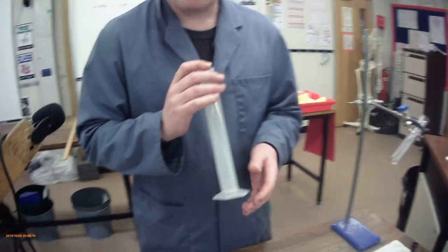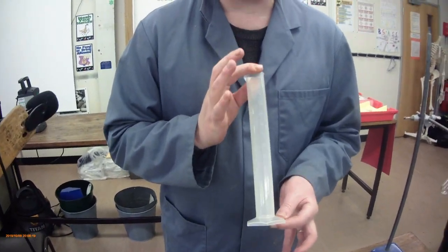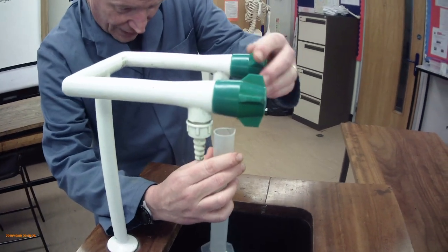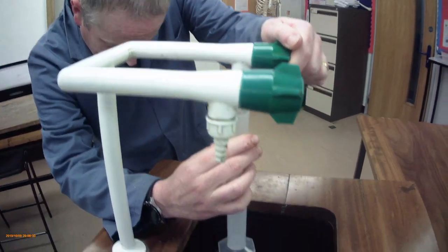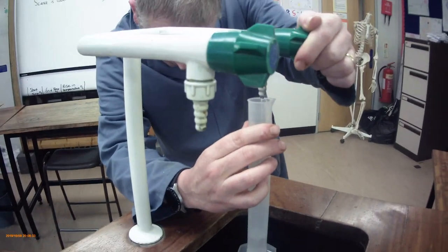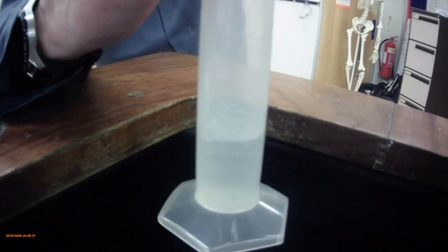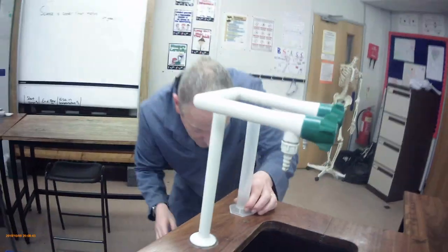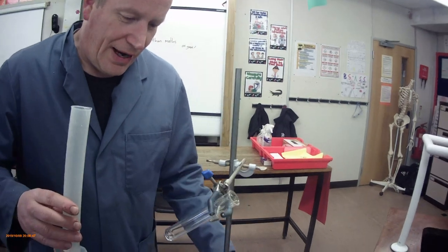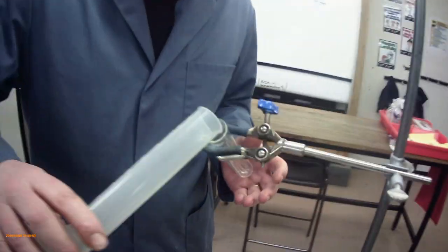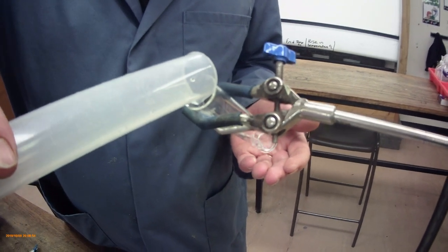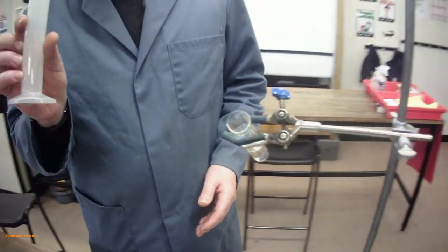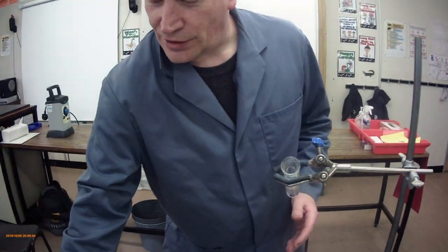For accurate measurements always use a measuring cylinder. We're going to use 20 milliliters of water. So very carefully I'm just going to fill up my measuring cylinder. And I'm happy that that is 20 milliliters of water. I've got that into our boiling tube here on our clamp stand.